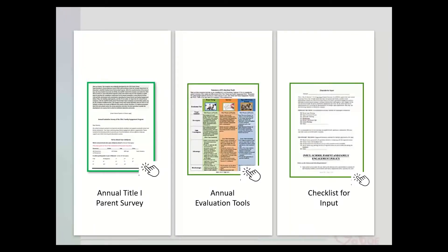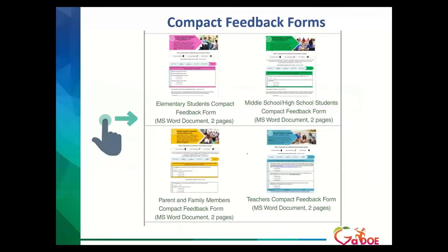Some resources available on our webpages — anytime you see a little finger or a 'click here' logo, those resources are attached directly. We will be downloading these videos as well as the PowerPoint so you can click right on them. Resources for input include the annual Title I Parent Survey, which is a Word document you can adjust to meet your needs, an annual evaluation tool, and a checklist for input. We also have compact feedback forms broken into grade level bands — elementary and middle/high school — for both parent/family members and staff members.